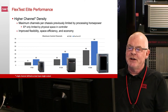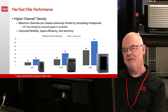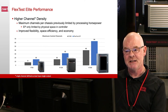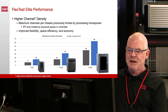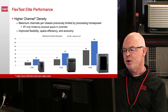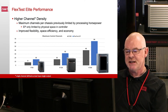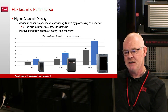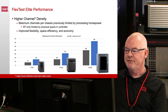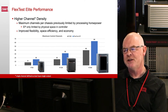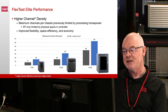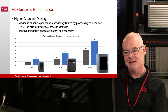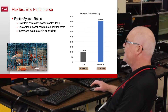The next slide looks at how we can achieve higher density of control channels inside the chassis with the Elite Performance. Here you can see we have the FT60, the FT100, and the FT200. In the FT60 we can double the channel capacity to 16; in the FT100 we can double the capacity to 32; and in the FT200 we can increase it to 64 — limited only by the available real estate inside the 20-slot chassis.